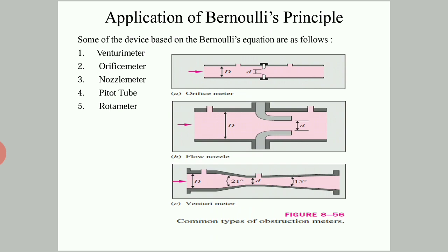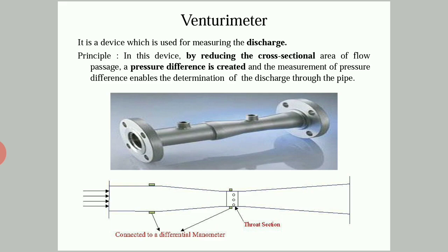The applications of Bernoulli's equation are based on the principle that as the velocity of a fluid increases, the pressure decreases, and vice versa. Devices built on this principle include the venturimeter, orifice meter, nozzle meter, pitot tube, and rotameter. Now the first application will be discussed.